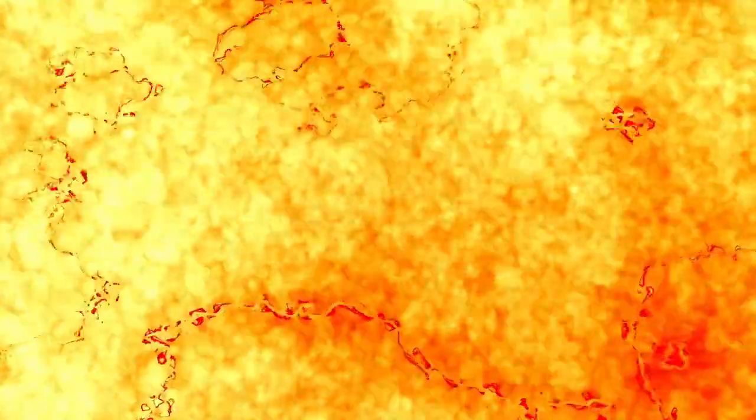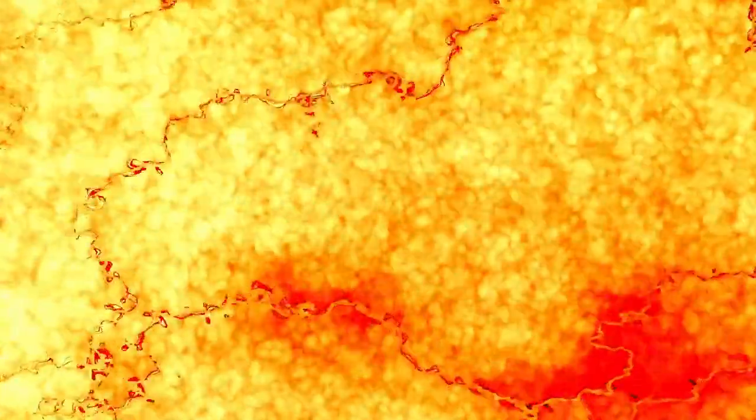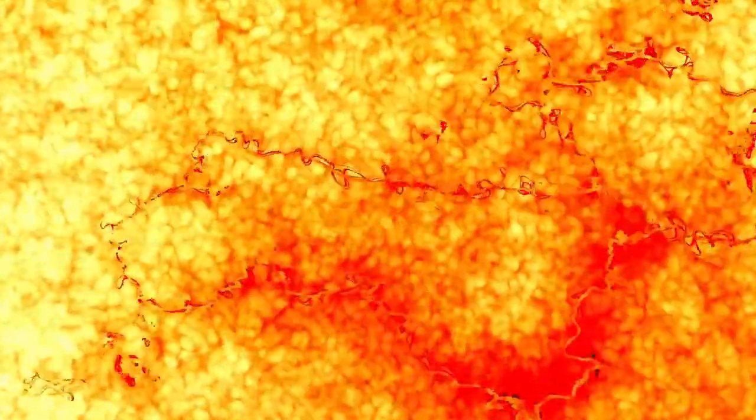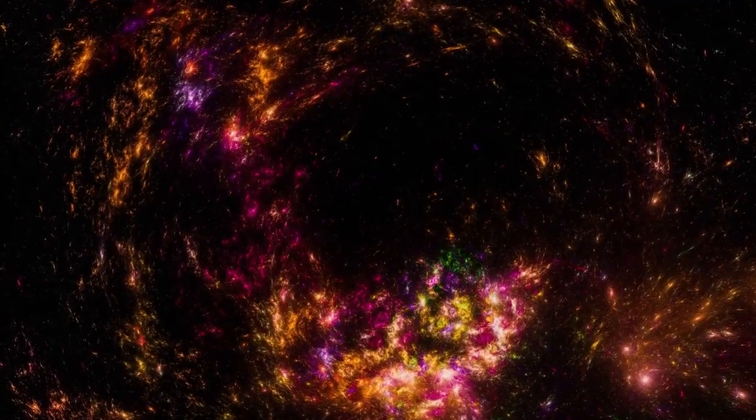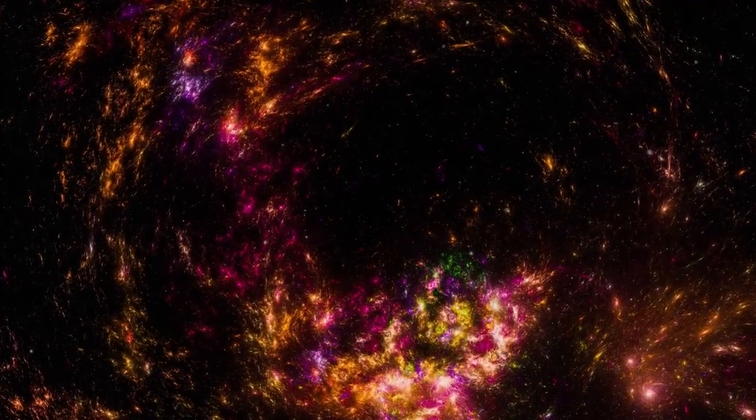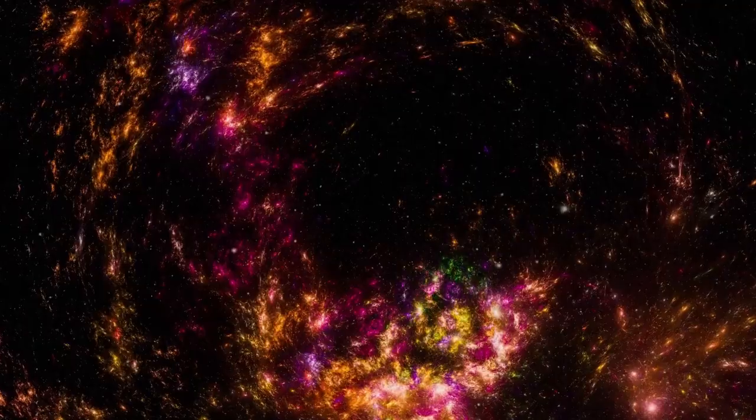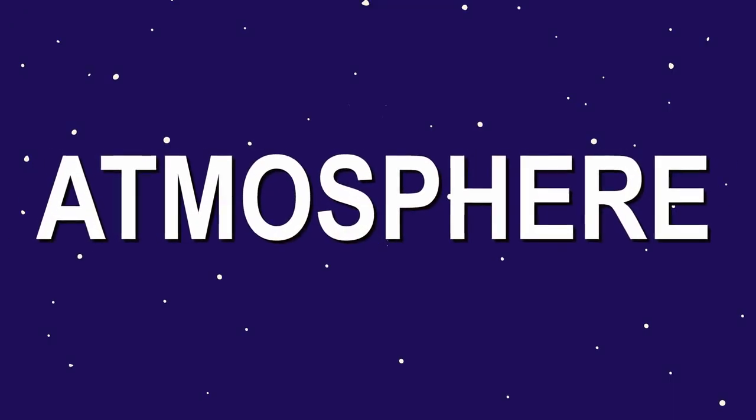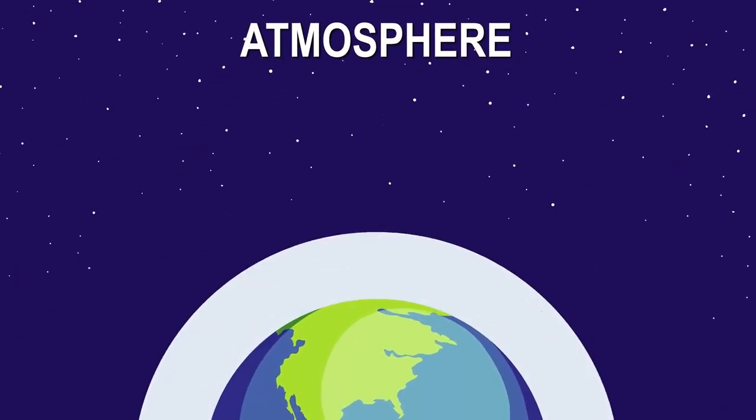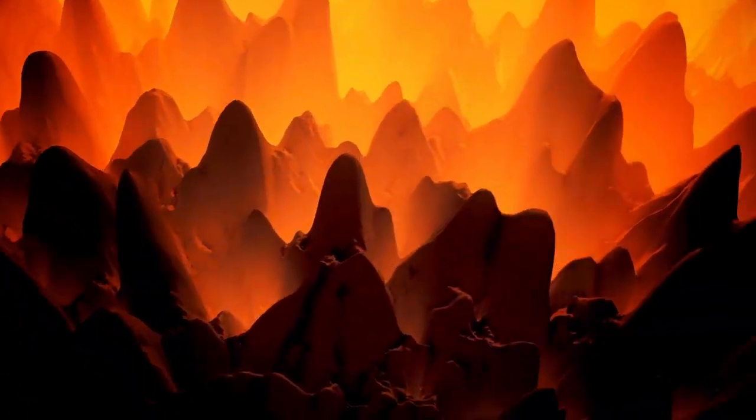But what it revealed wasn't just breathtaking—it was deeply unsettling. In its ultra-deep field images, Webb found galaxies so old, so massive and well-formed that they should not exist. These galaxies appeared less than 600 million years after the Big Bang, but were already mature, dense and filled with supermassive black holes, some of which are 1,000 times more massive than the one in the center of the Milky Way.